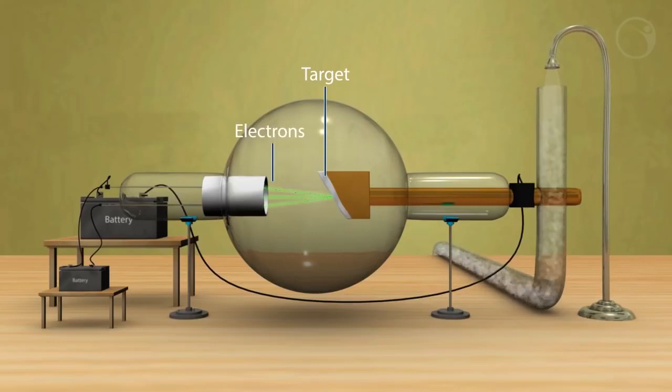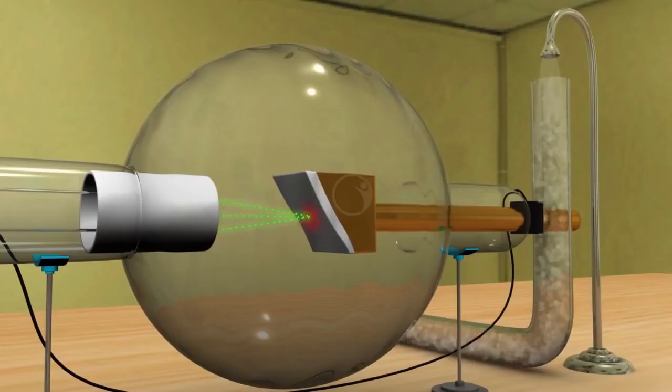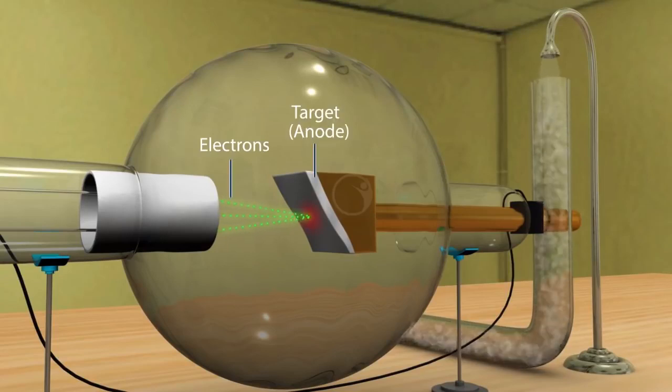This will produce the x-rays almost perpendicular to the electron beam. A very high potential of 20 kV is applied between the source and the target. Due to the high potential difference, the electrons are accelerated towards the anode and hit the metal.